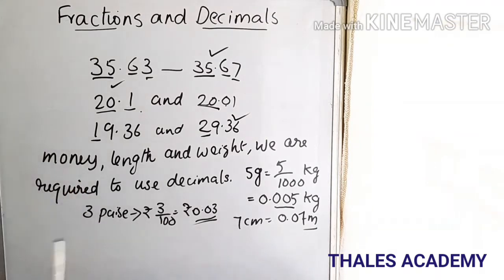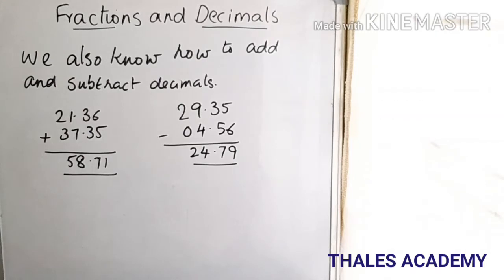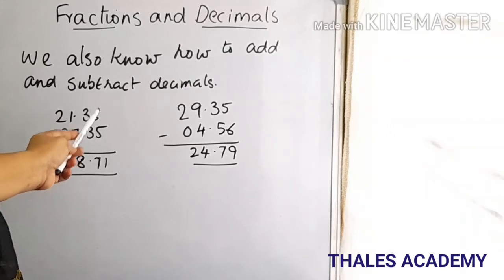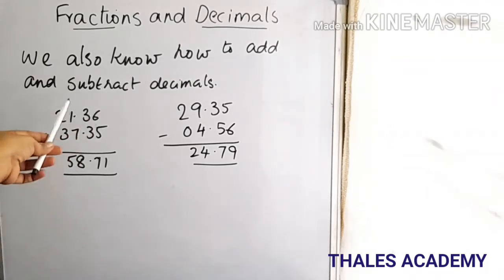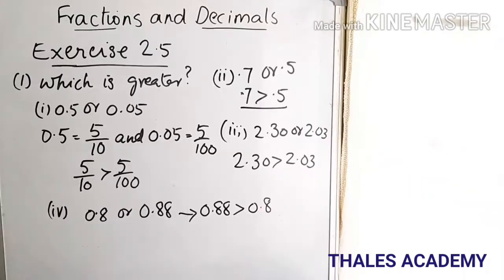We also know how to add and subtract decimals. For example, 21.36 plus 37.35 — we first add the digits to the right of the decimal point and then add the numbers to the left of the decimal point. In subtraction we follow the same process.